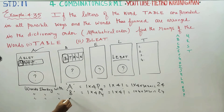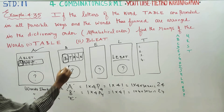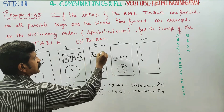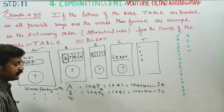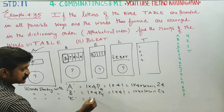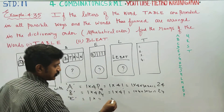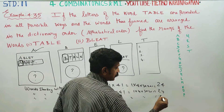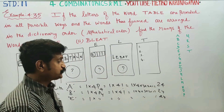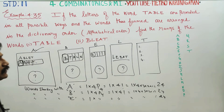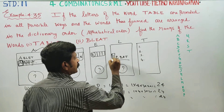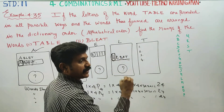Words starting with E: same concept. E is locked. The remaining 4 places are free, giving 4P4 = 24 words. Then words starting with L: L is locked, giving another 24 words.